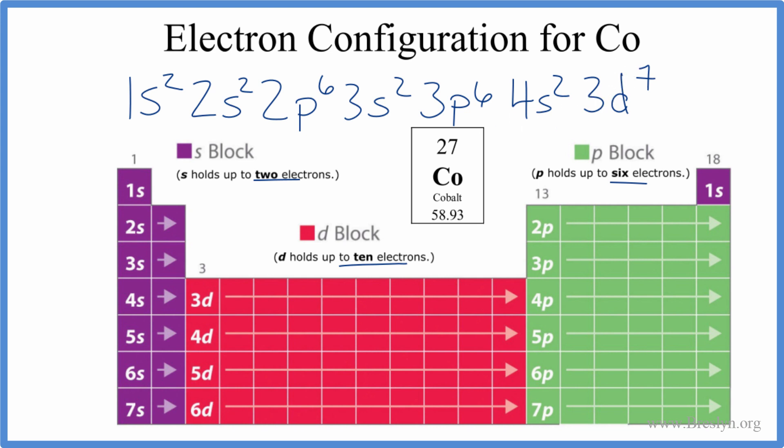To find cobalt on the periodic table, we go 3d1, 2, 3, 4, 5, 6, 7. So cobalt is right there on the periodic table.